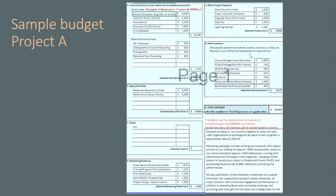We've got a couple of examples to look at — links are being shared in the chat so you can take a closer look. Take a minute to look at this budget on screen. If you want to point out anything you think they did well, or think might be missing, feel free to drop it in the chat. This is the expense side; we'll look at the income side in just a second.